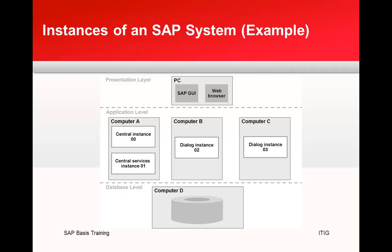Here is an example of instances of an SAP system. A PC with SAP GUI installed is a client tool for accessing the ABAP application server; a web browser is used for the Java application server. In the middle you have ABAP and Java instances. Computer A has a central instance and a central services instance; computers B and C each run only a dialog instance; computer D runs only the database.